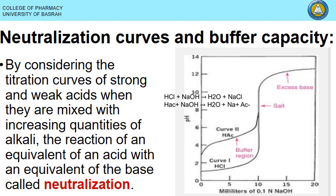The HCl solution starts at a very low pH. Adding a few drops of NaOH produces a rapid increase at the neutralization point at pH 7, followed by excess base. This gives the characteristic S-shaped curve for NaOH against HCl.